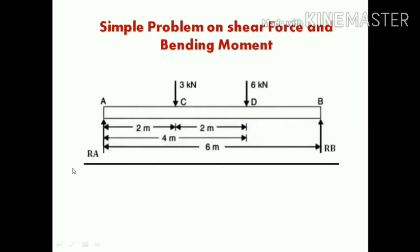Let's look at the problem. We have a simply supported beam with supports at A and B. Two point loads are acting on the beam: a 6 kilo newton load at a distance of 4 meters from point A, and a 3 kilo newton load at a distance of 2 meters from point A. The total length of the beam is 6 meters.